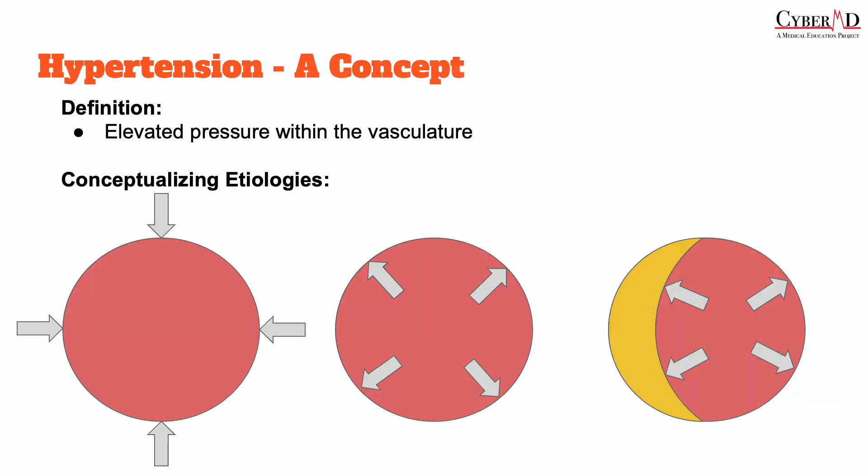I really just wanted to keep things simple and give you a framework to think about hypertension. Hypertension is elevated pressure within the vasculature, and if you think of the vasculature as a container for the blood and start thinking about how can I elevate the pressure within a container, the two easiest ways are: A, squeeze down on the container — which is what you're seeing on the left. So if you have catecholamine excess squeezing down on that vasculature, that's going to cause an increase in pressure. We know that from the laws of physics.